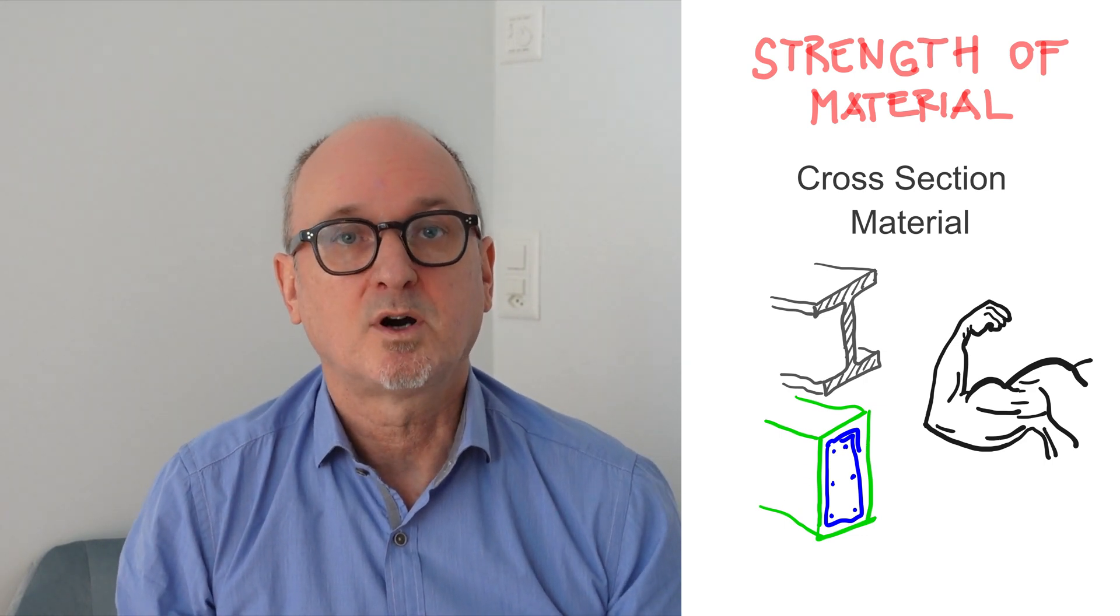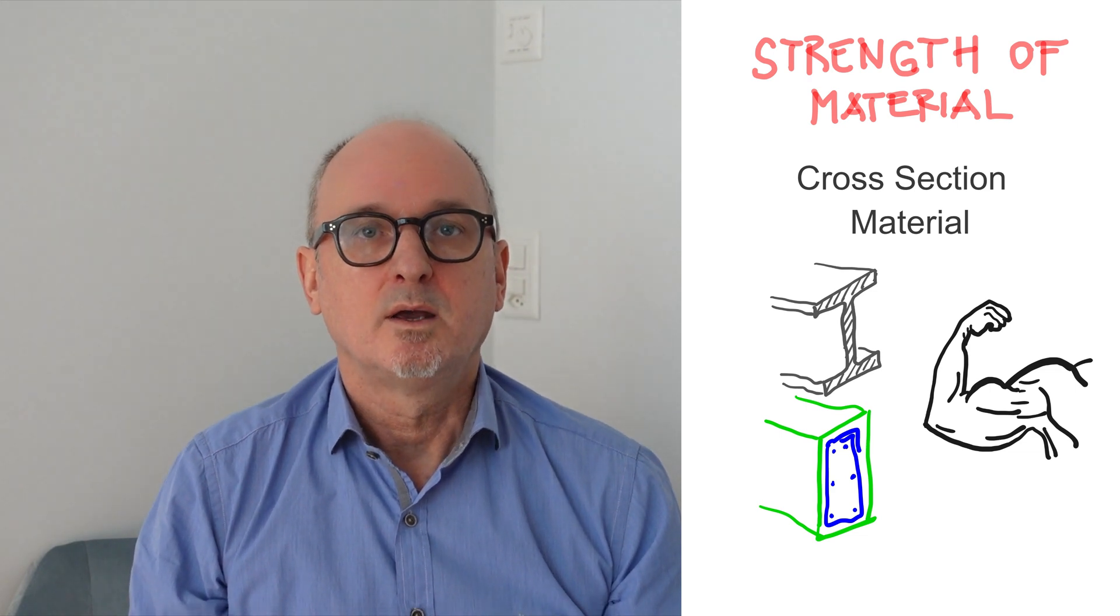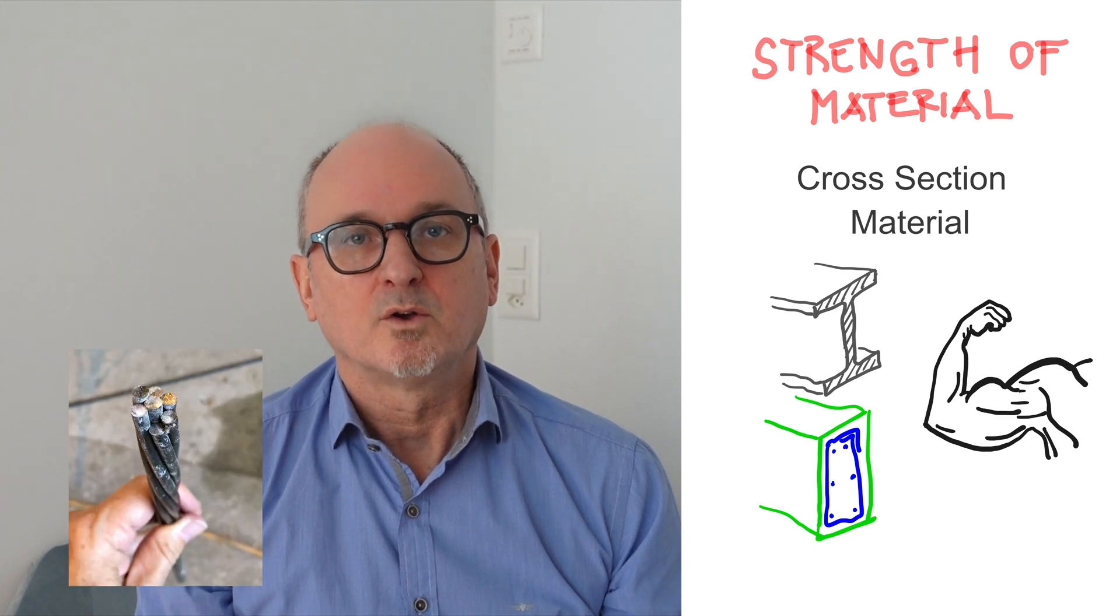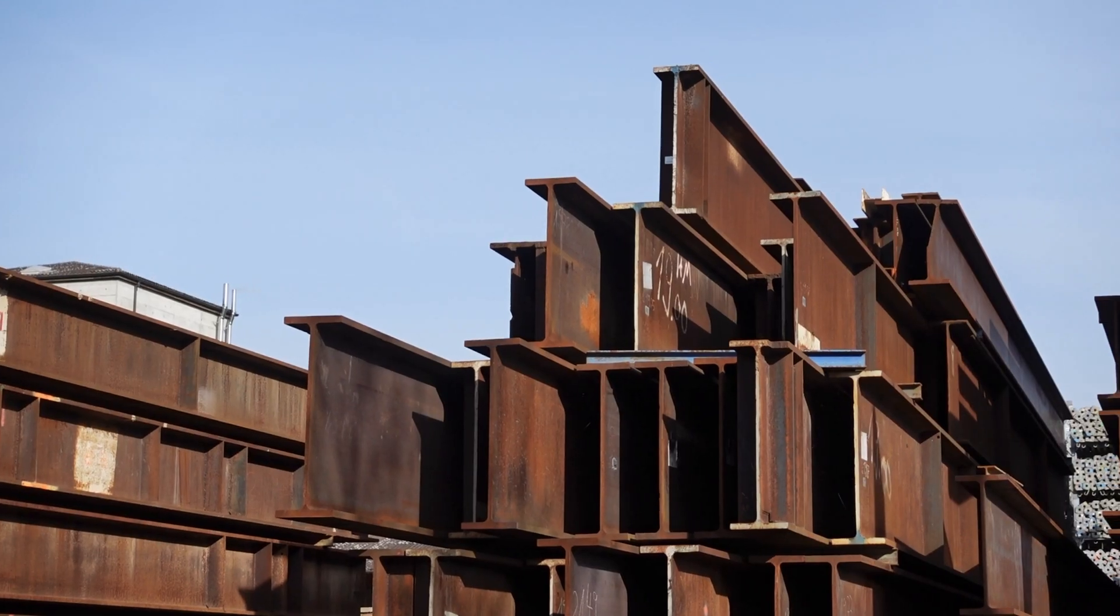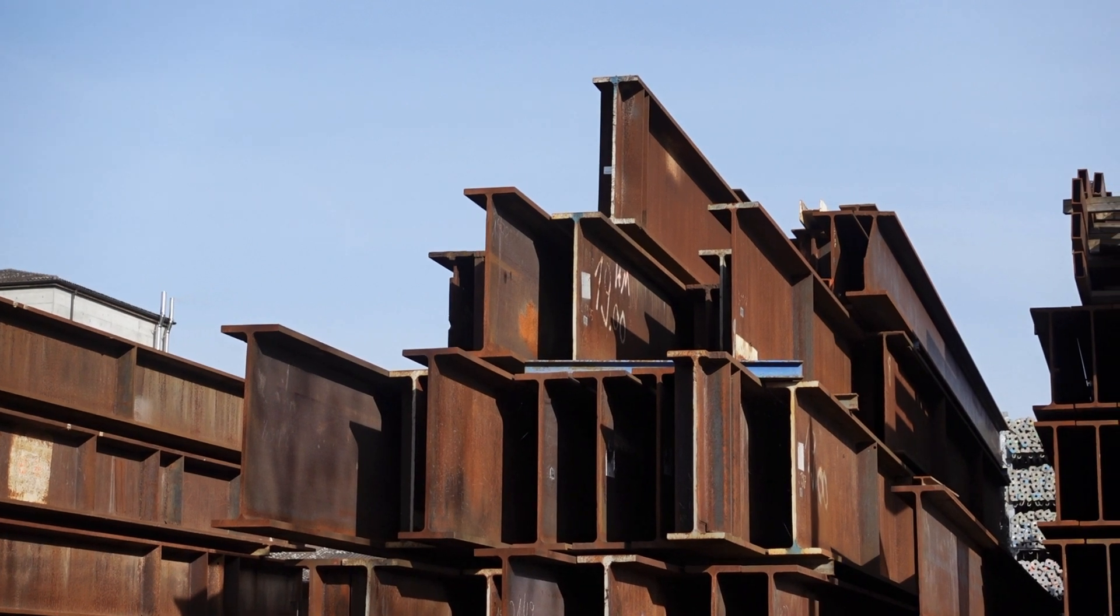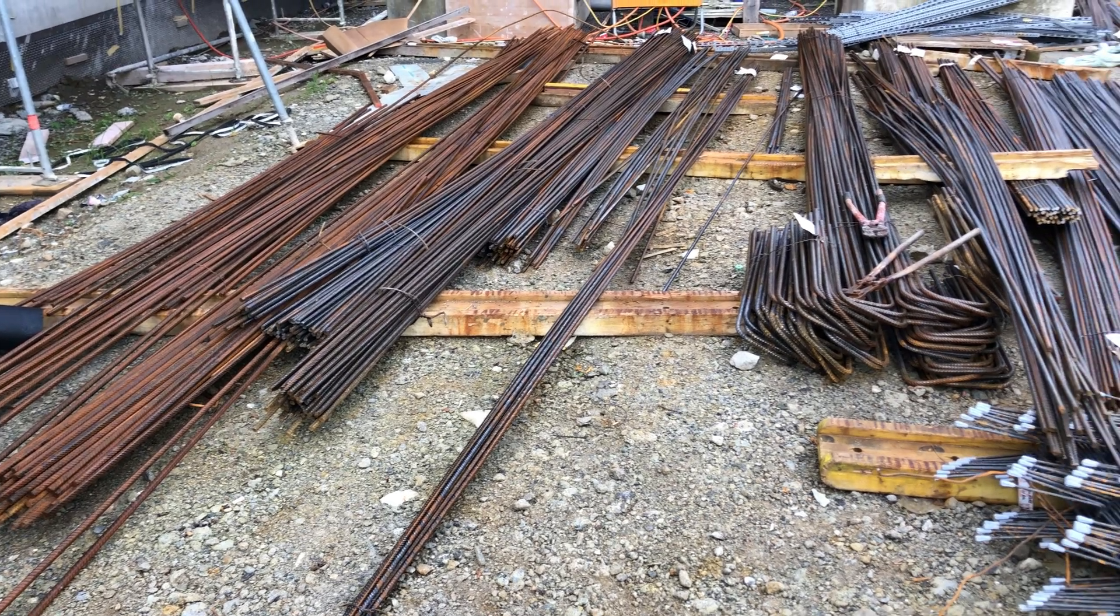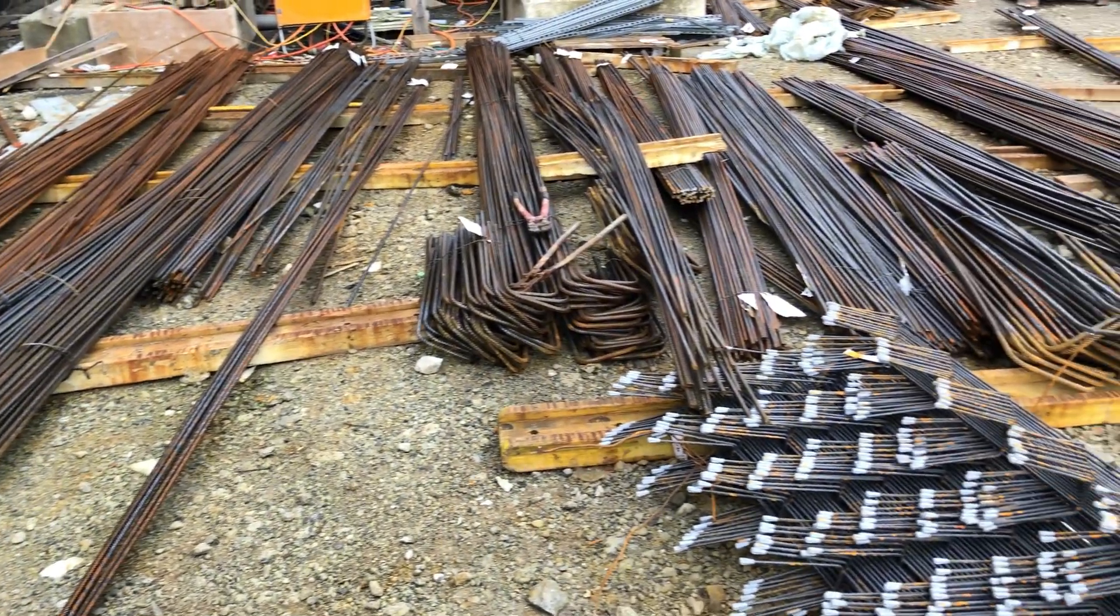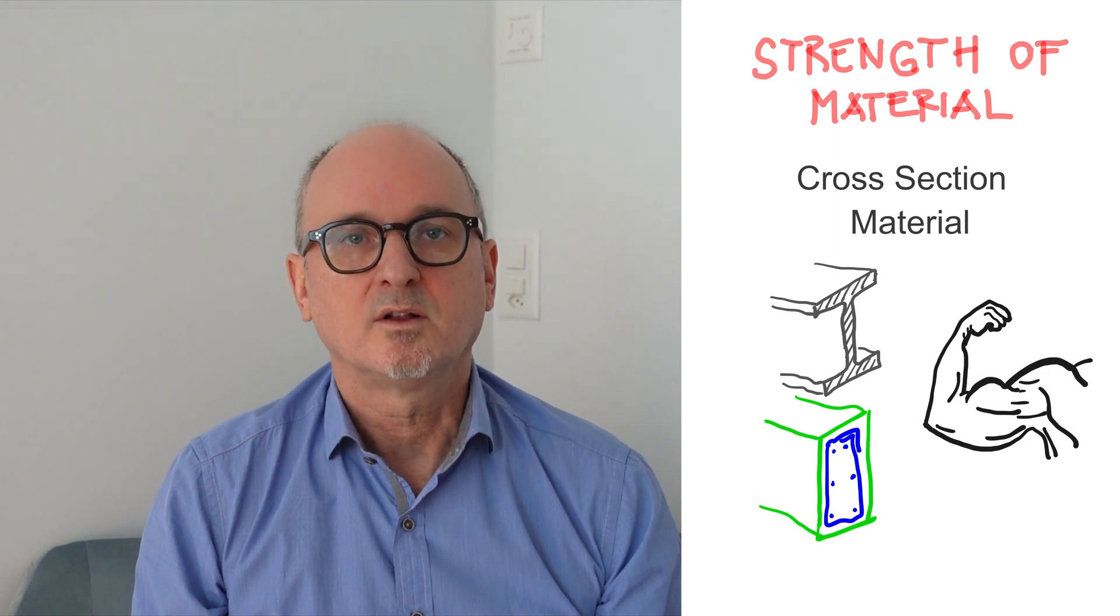On the other side, and that's the counterpart, we have what we call the strength of material. Here we are talking about either a real existing construction or a planned construction. So there are specific cross sections of beams and slabs, and there are specific materials with determined properties. And the results of the strength of material side represent the resistance of the structure.